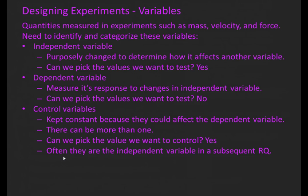Often, control variables are the independent variable in a subsequent research question. So you need to be careful when identifying independent variables and control variables because they are interchangeable. But remember, the research question is written with the independent variable affecting the dependent variable. So the control variables are these important variables that can affect the dependent variable, but they're not part of the research question.